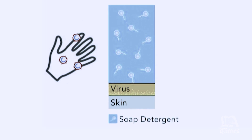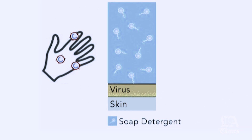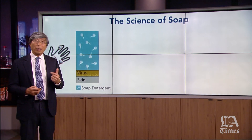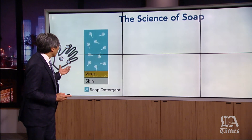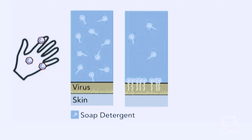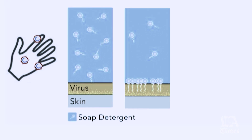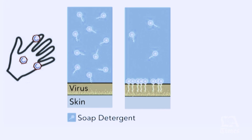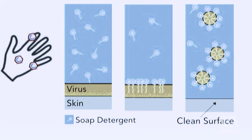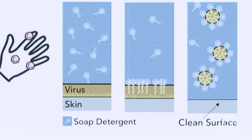Detergent — regular detergent, dishwasher fluid, hair shampoo, soap — acts as a surfactant. These soap particles orientate themselves towards the fatty layer of the virus, and in so doing they actually lift off the viruses and create a clean surface.